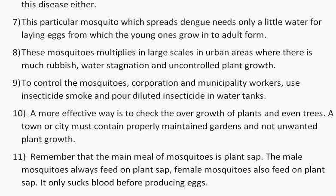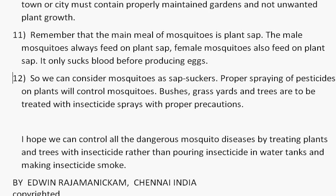A town or city must contain properly maintained gardens and not unwanted plant growth. Remember that the main meal of mosquitoes is plant sap. The male mosquitoes always feed on plant sap. Female mosquitoes also feed on plant sap, and only suck blood before producing eggs. So we can consider mosquitoes as sap suckers.